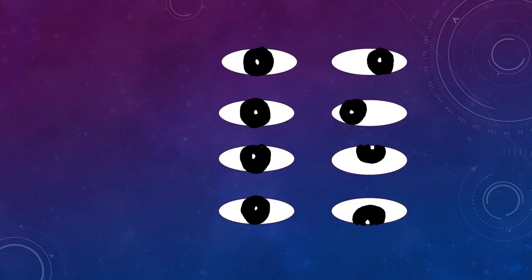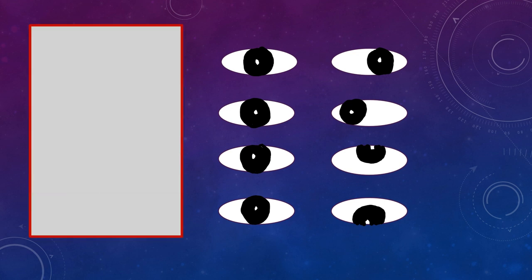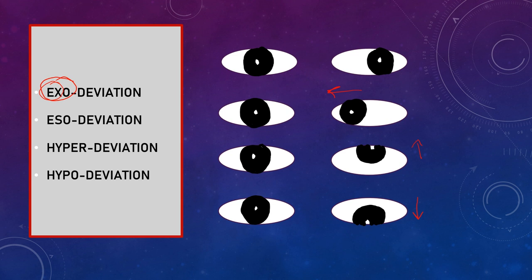Squint or strabismus is basically a deviation of one eye. If the eye is deviated towards outside, that is called exodeviation — you can remember 'x' for exterior. If the eye is deviated towards the nose, that is inside, it is called esodeviation. If the eye is deviated upwards it is called hyperdeviation, and if deviated downwards it is called hypodeviation.